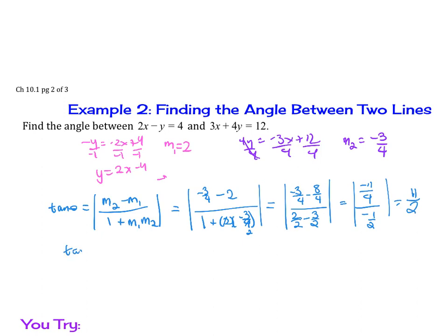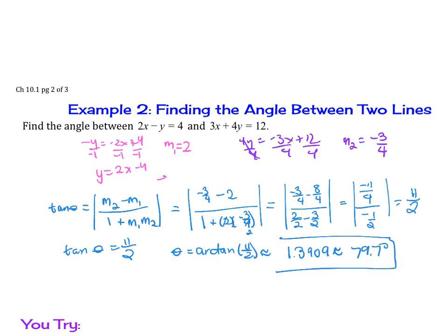So tangent of theta equals 11 over 2. To solve for theta, take the arctangent of 11 over 2. Plugging into a calculator gives 1.3909 radians, or 79.7 degrees. You want both the radians and the degrees values.